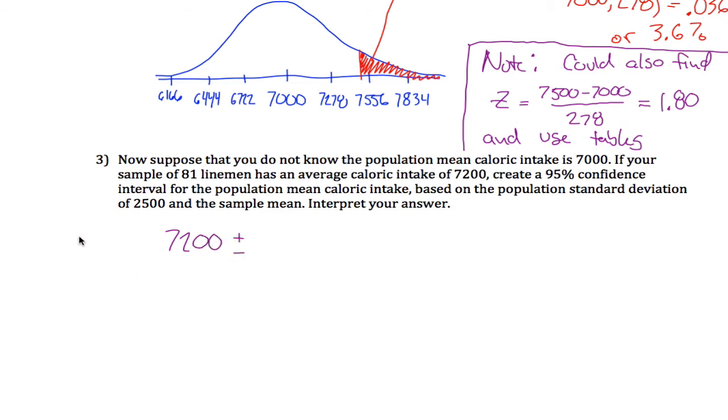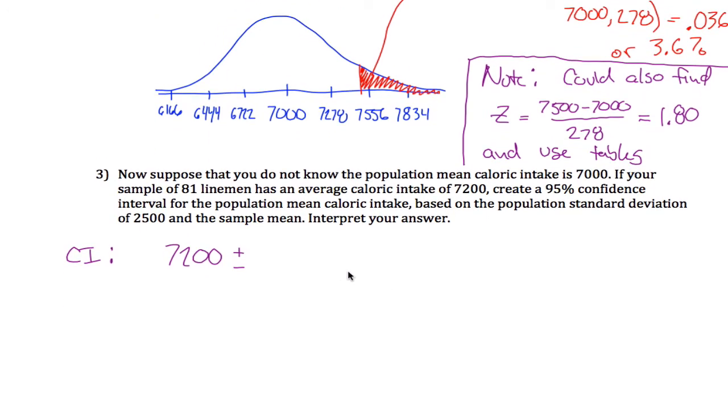We're trying to create a confidence interval. What you do with your confidence interval is you start with your best guess, and then you have to go up or down some number of standard deviations. First of all, we know that the standard deviation is 278. But the question is, how many of those do you want to go up and down? Well, a 95% confidence interval is 1.96 standard deviations.